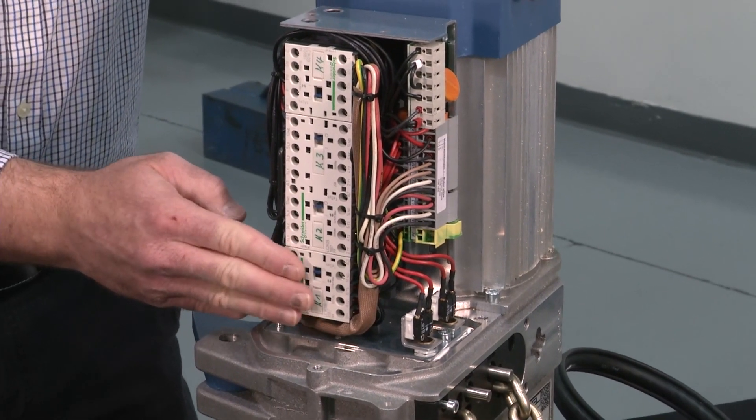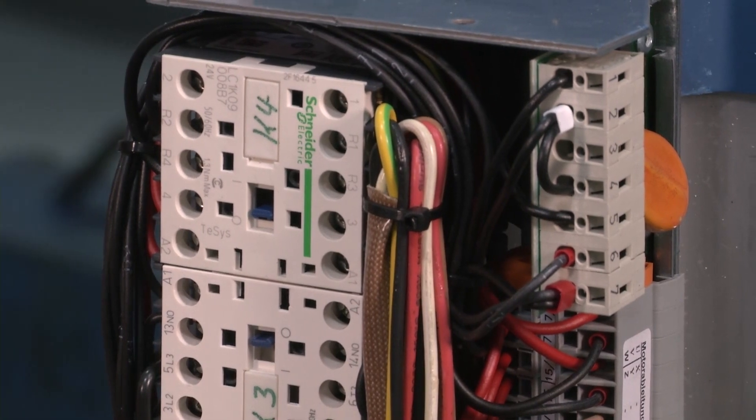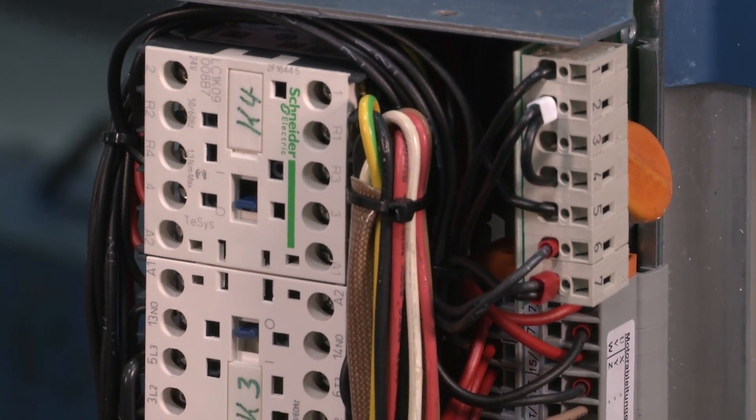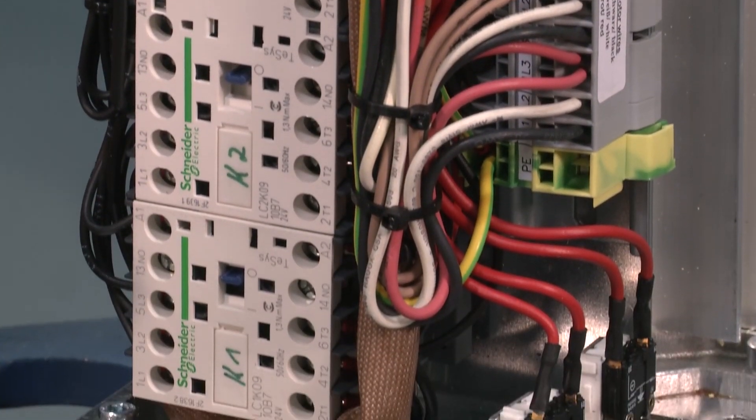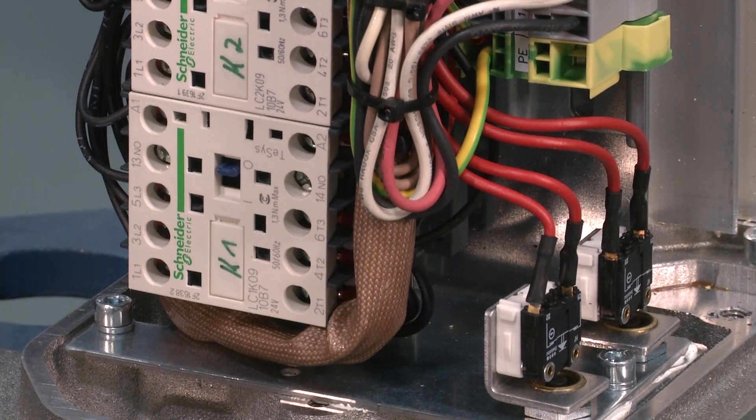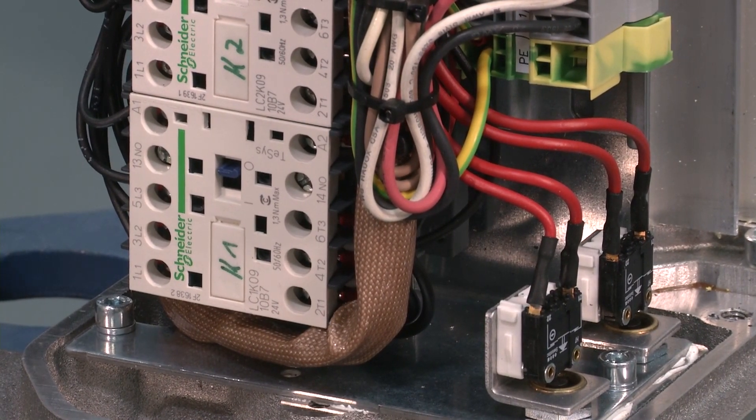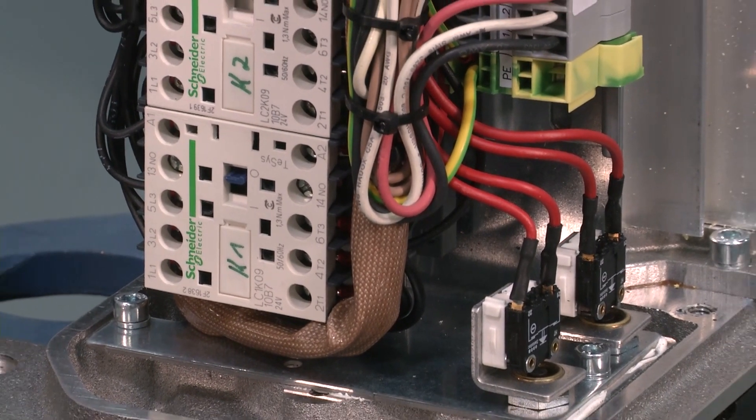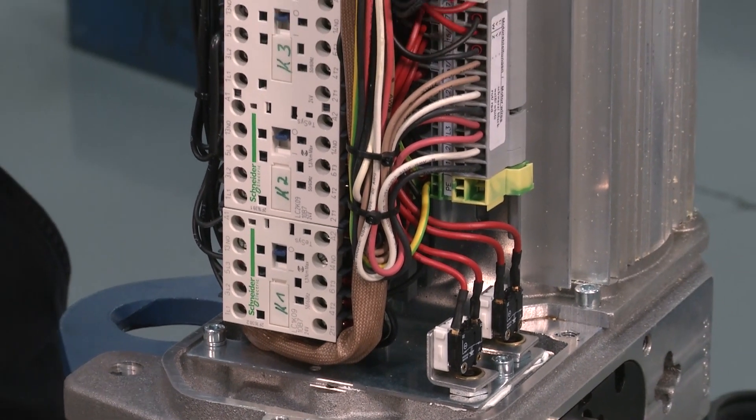So you notice here the majority of our hoist offering is all Schneider contactors, so widely available, widely recognized. And you can either buy them from Gorbel—we have plenty of stock—or you can buy them at your local electrical supply house. Some of the smaller hoist bodies do have a more specific contactor, but we have those readily available in plenty of quantities here at Gorbel and we can ship them out to you anytime.